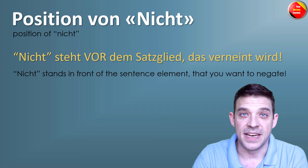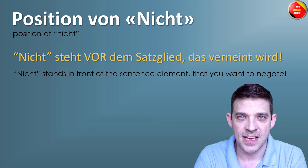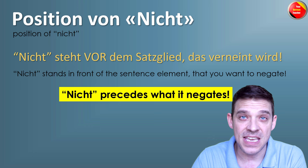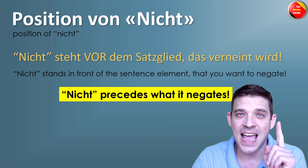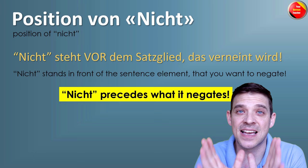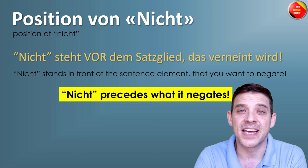Nicht steht vor dem Satzglied, das verneint wird. In English: the word NICHT stands in front of the sentence elements which you want to negate. Or shorter: NICHT precedes what it negates. This is — we call it a rule. It is almost a rule because there's only one exception. Every sentence element which you want to negate — you can put NICHT right in front of it.